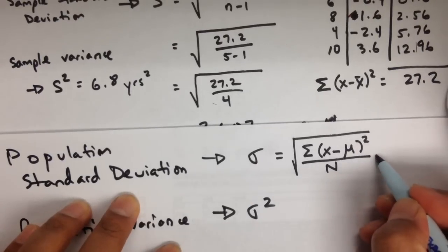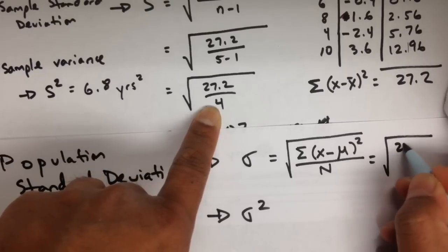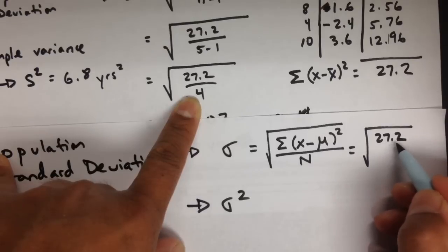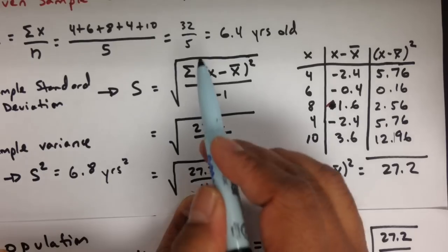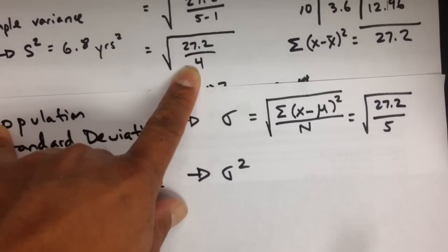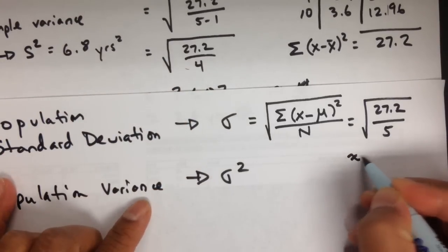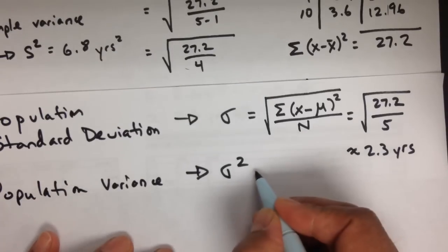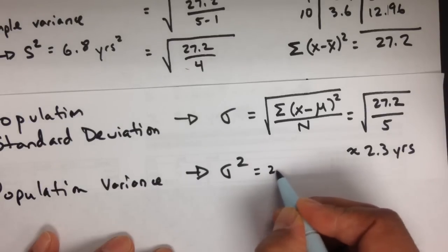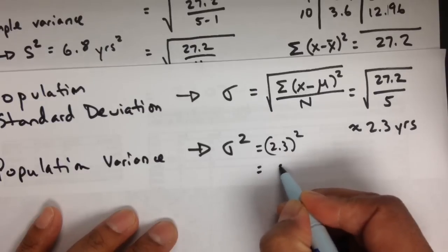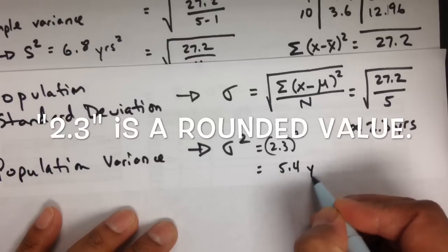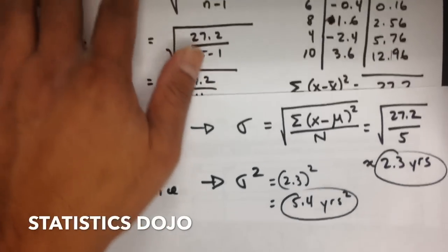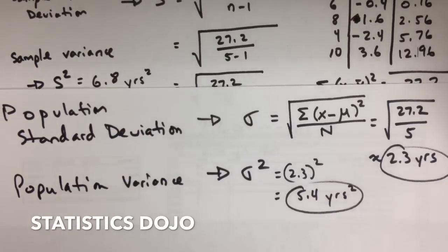If we assume only 5 kids are at the party — meaning it's the entire population — the sum of squared deviations is still 27.2 using the same table method, but now we divide by 5 instead of 4. This gives a population standard deviation of approximately 2.3 years. The population variance is 2.3 squared, which rounds to 5.4 years squared. I hope that helps — good luck as you continue working on measures of variation.